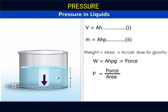And we know that pressure is equal to force over area. And so, pressure P is equal to A h rho g over A. The A cancel out and pressure equals h rho g. This is the expression for the pressure exerted by a liquid of density rho at depth h.